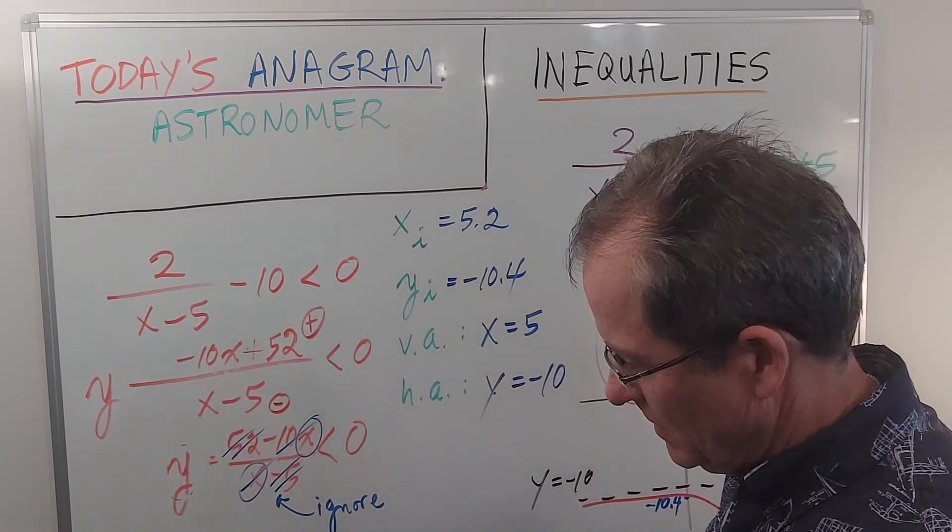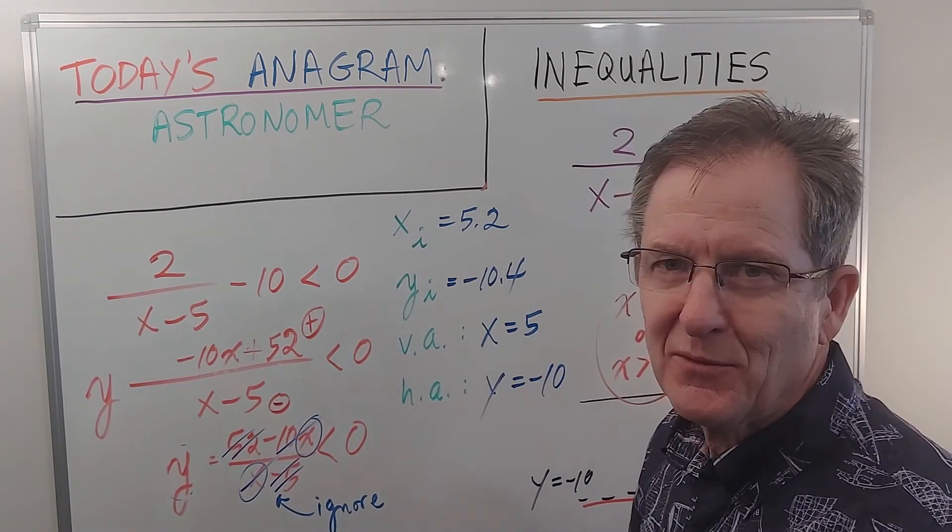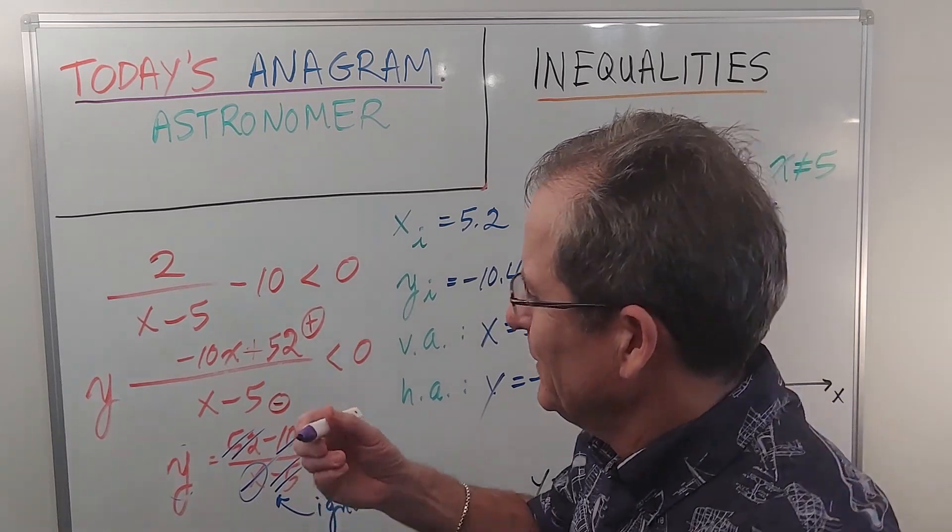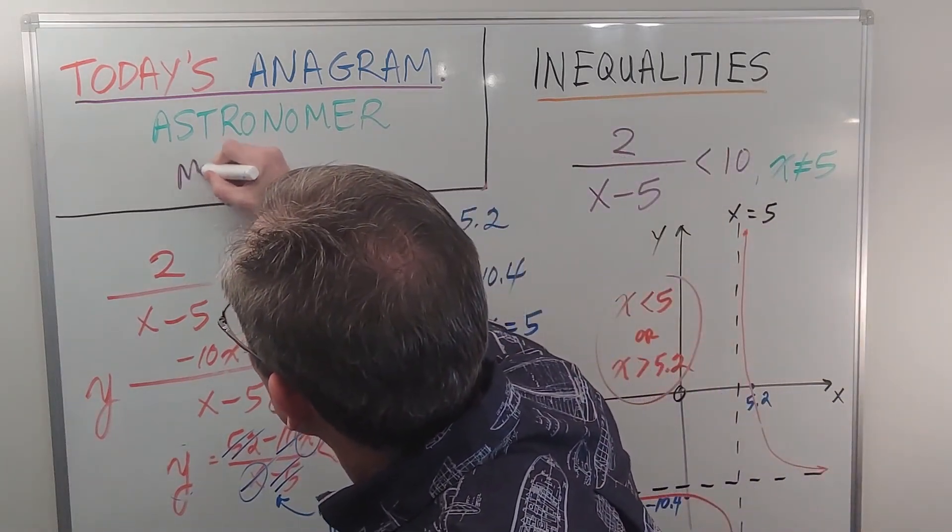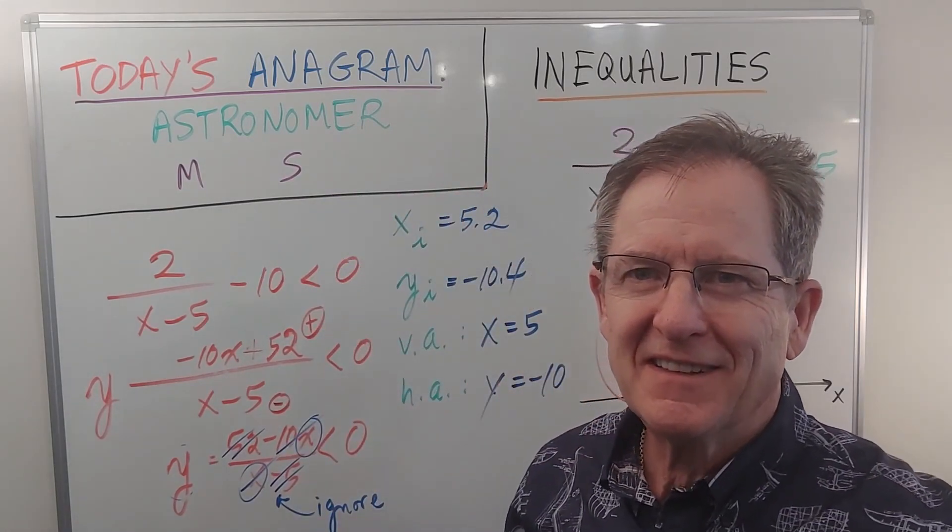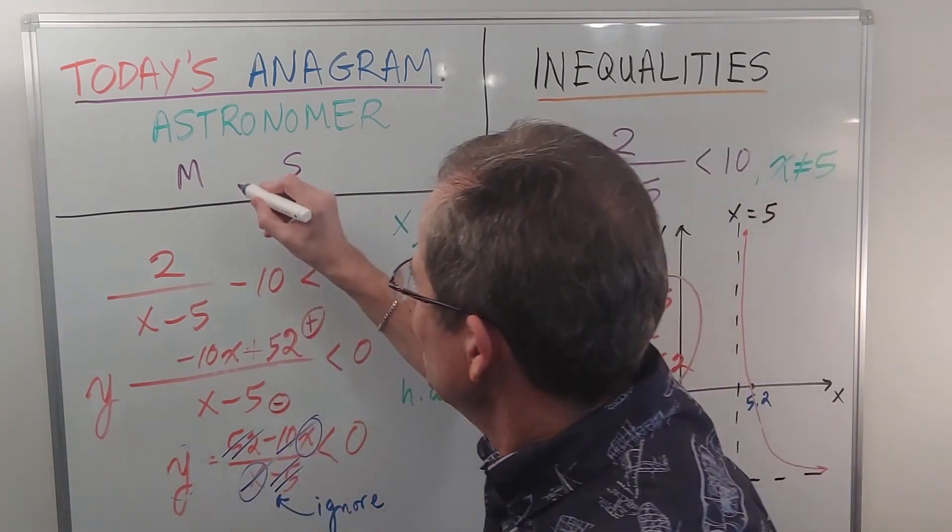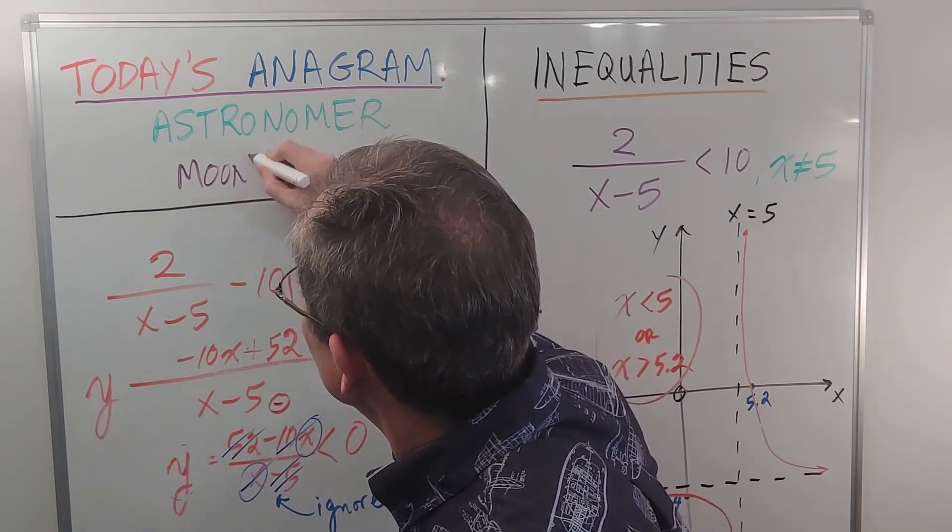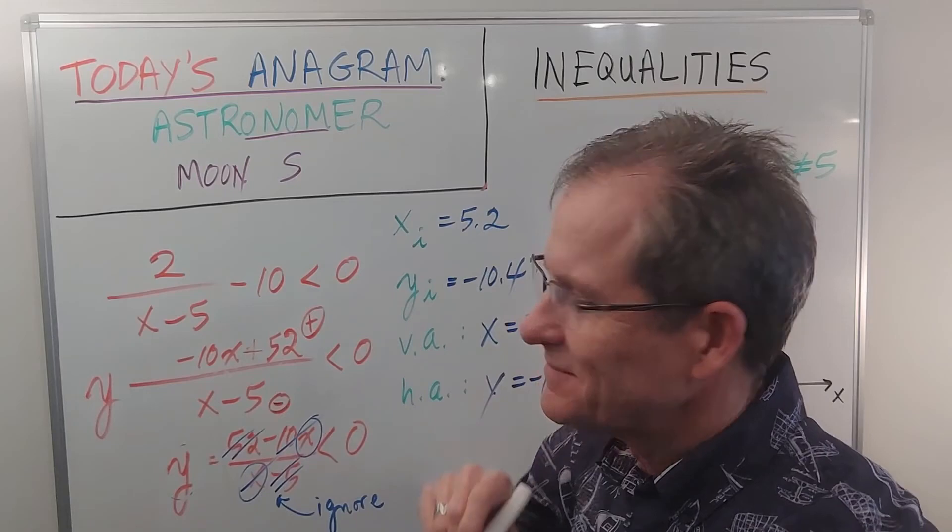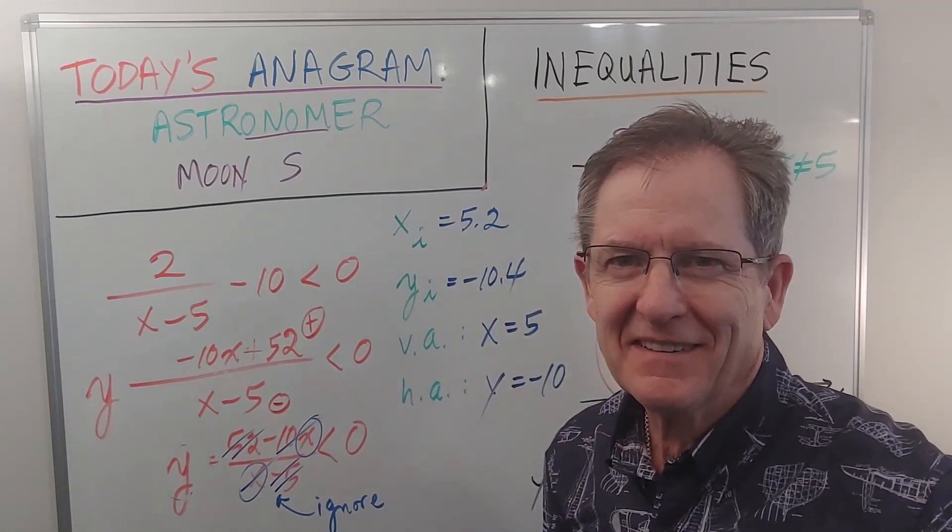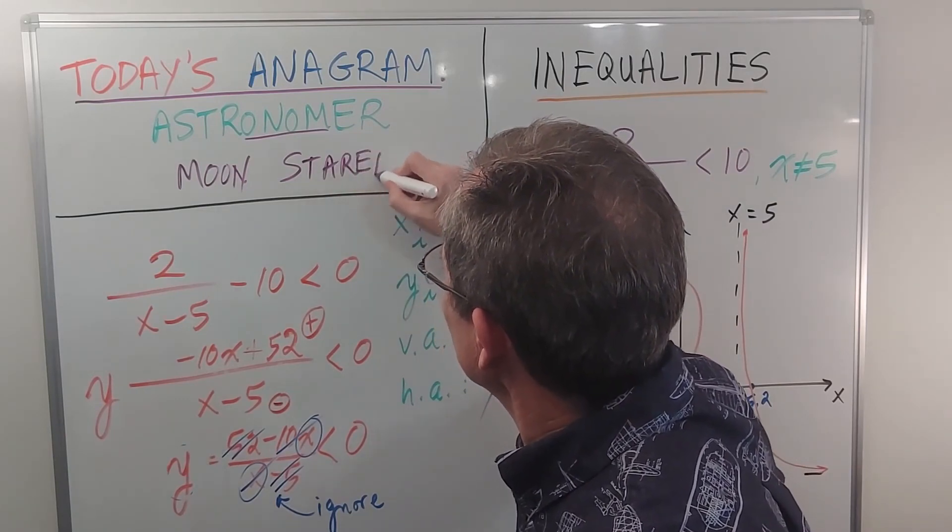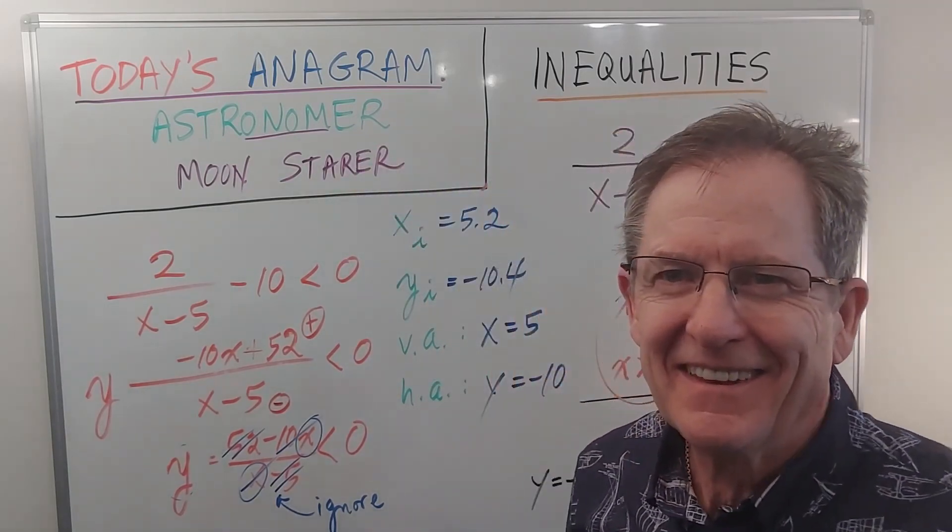Alright, before we go away, what's the anagram for astronomer? It has something to do with what they like to do. The first word is M, the second word is S. I'll give you a hint. It's moon. So take out those four letters. What's the second word? Starer. They like staring at the moon. How do you like that?